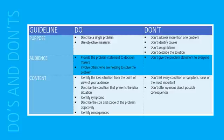Now let's take a look at the do's and don'ts of developing problem statements. First, regarding your purpose: describe a single problem — don't address more than one problem at a time. Second, your audience: provide a problem statement to decision makers, but don't give the problem statement to everyone. And finally, content: describe the condition that prevents the ideal situation, but don't offer opinions about possible consequences. Take a look at the rest of these do's and don'ts as you look to develop your problem statement.